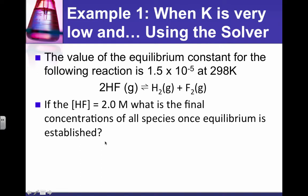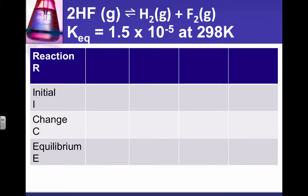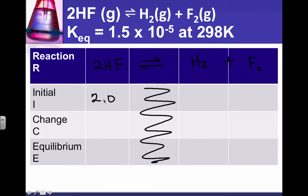So we know this reaction is hardly going to go forward at all. Let's say we're given a concentration for HF equal to 2 molar. We're asked to find the final concentrations of all the species once equilibrium is established. So we're going to use a rice table to set up what's going on, to keep us organized. The first thing we do is put our reaction down there.